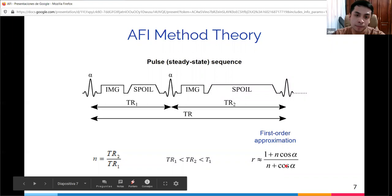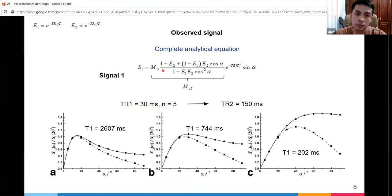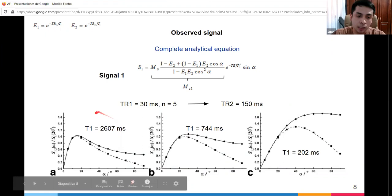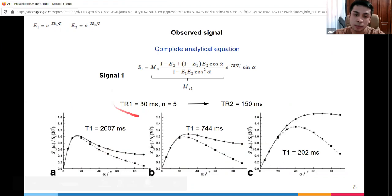This is the complete analytical equation for signal 1. The equation for signal 2 is similar. Capital E1 and E2 correspond to the exponential decays of repetition time 1 and 2. The plots show normalized signal as a function of excitation flip angle for three different T1 values, with TR1 at 30 milliseconds and n fixed to 5, so TR2 is 150 milliseconds.